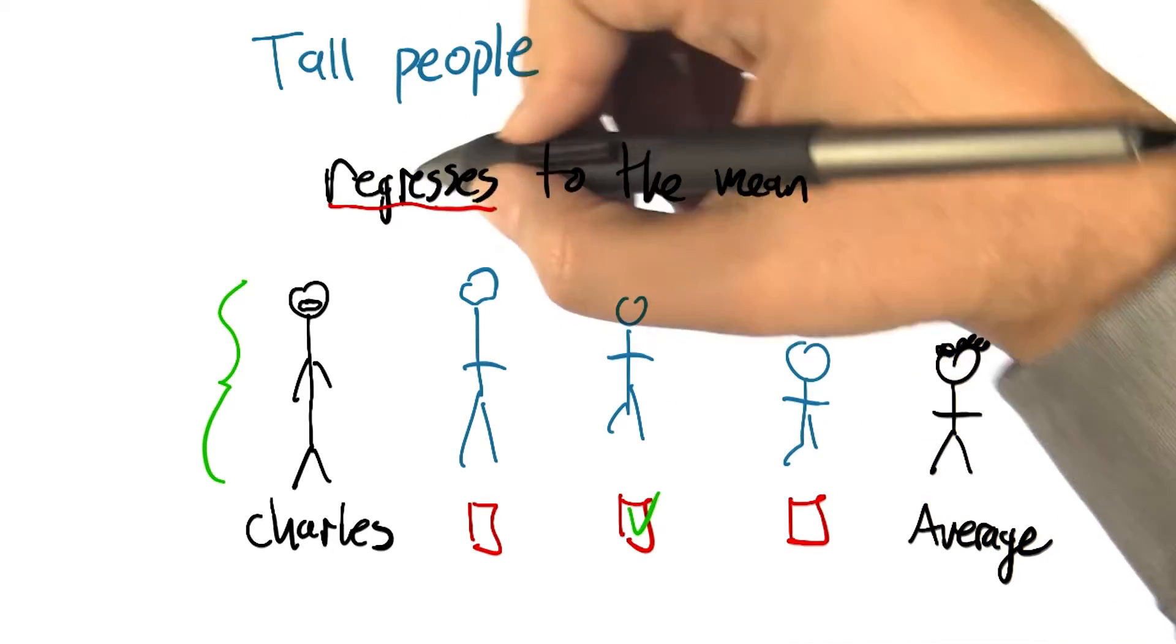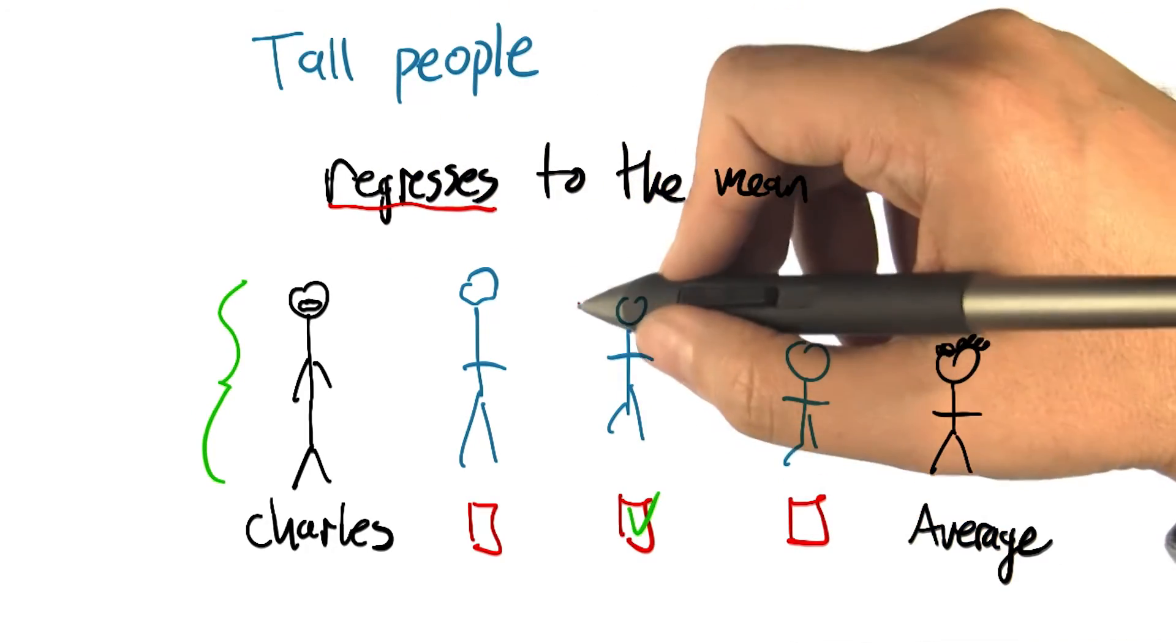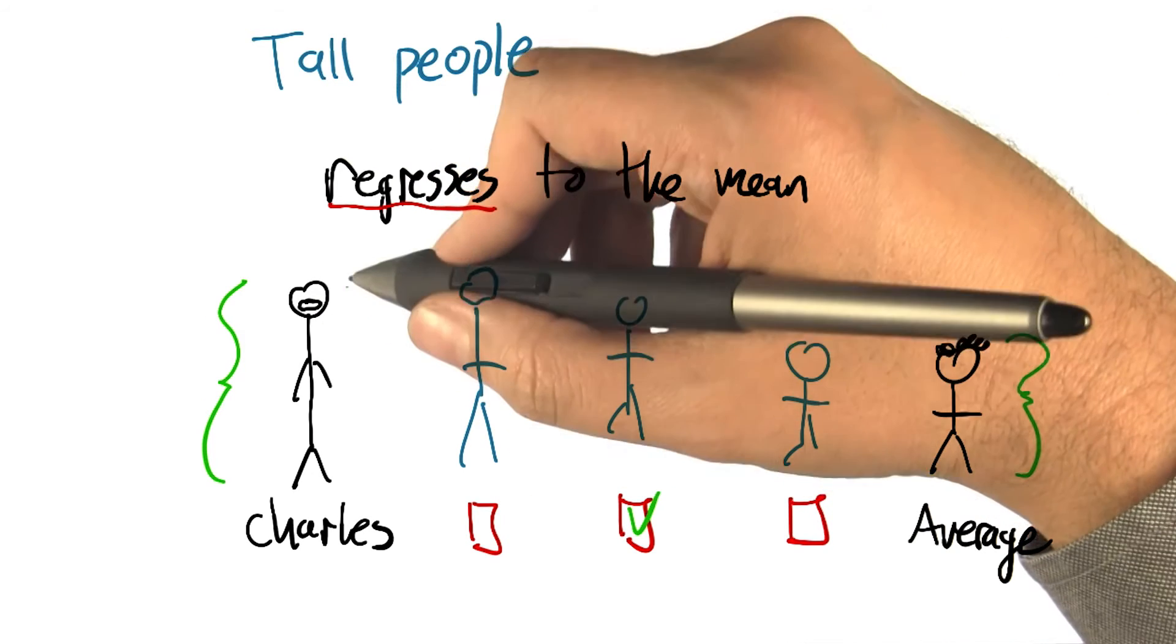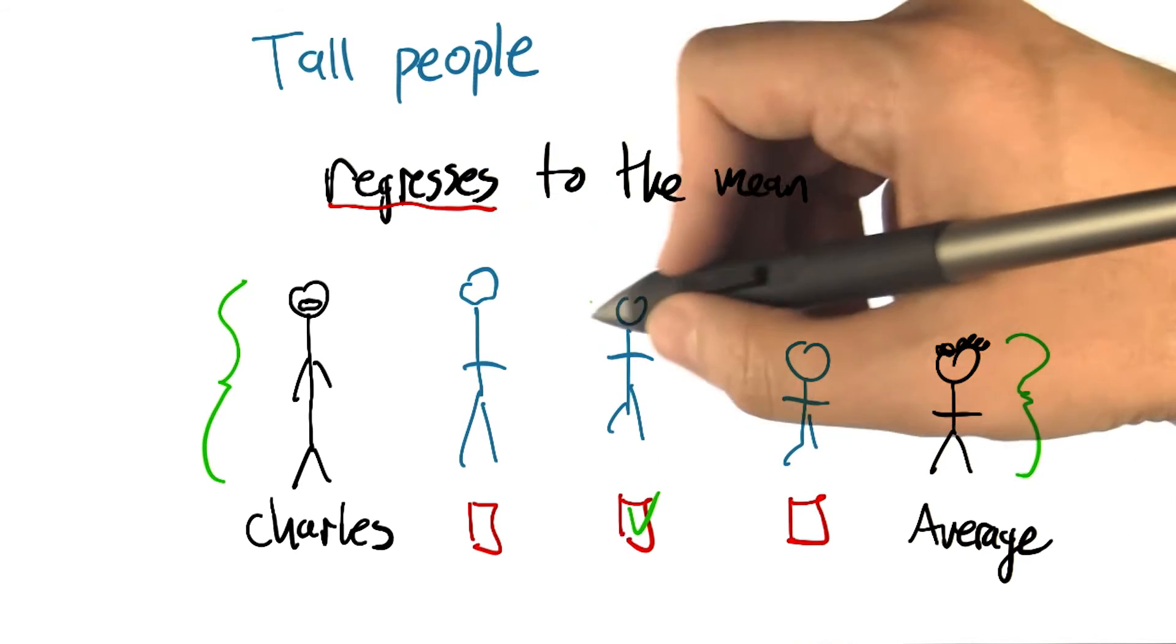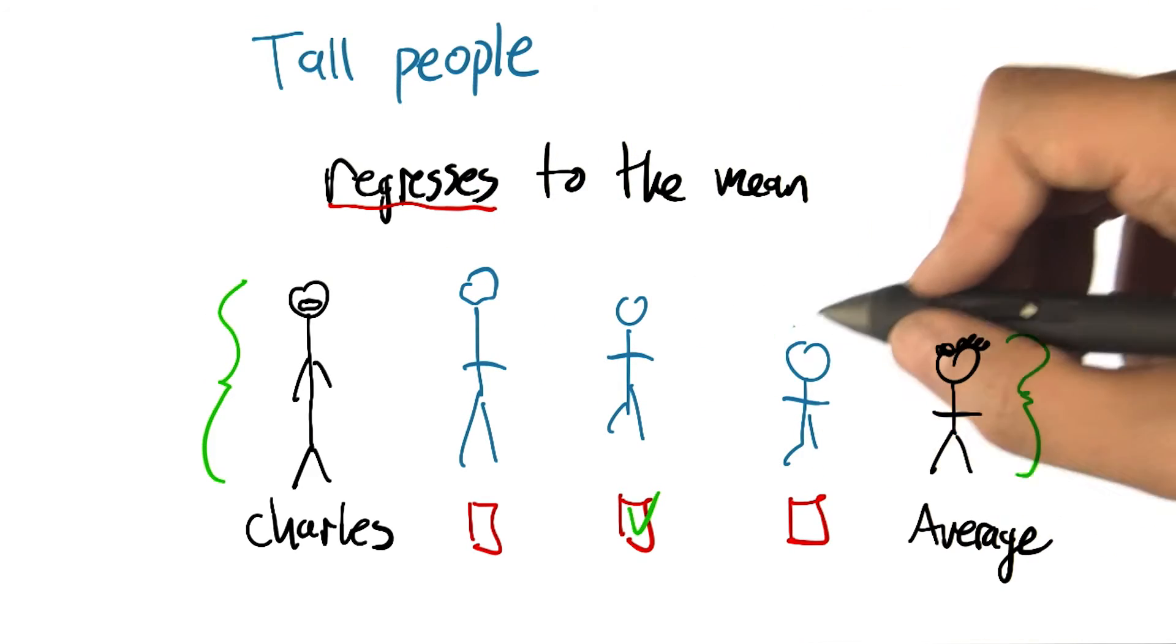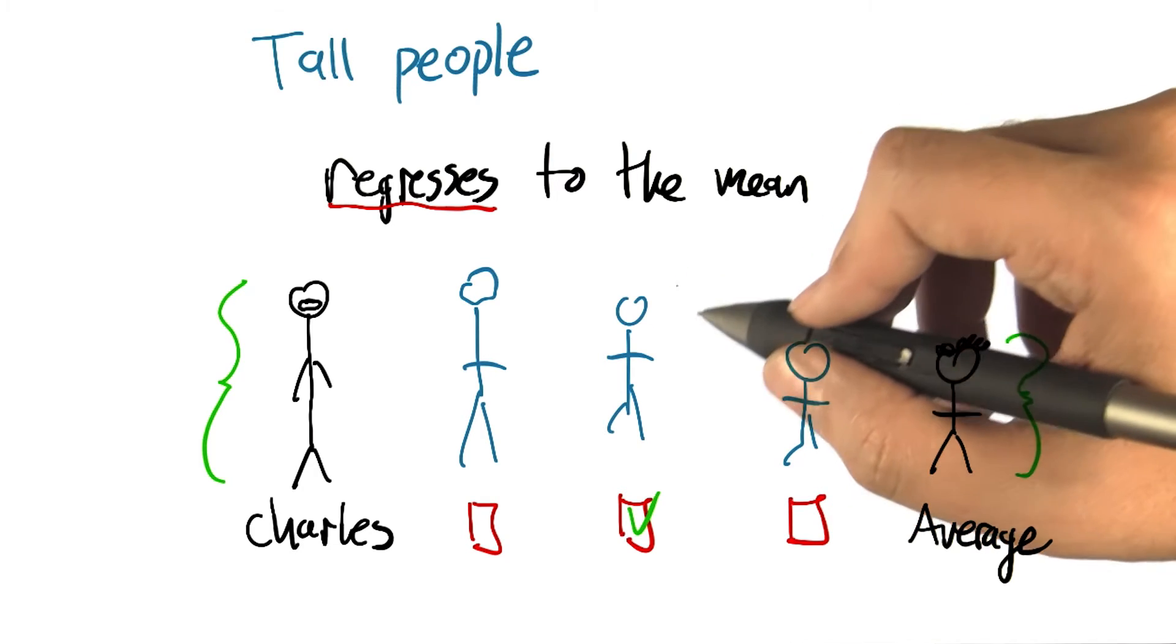And here we really do mean regresses in the sense of going back to this kind of more primitive state. If you think about average height people as being like your ancestors, then you as a very tall person tend to have kids that regress back towards that average value, or that sort of more older, more ancient value.